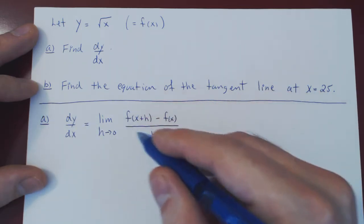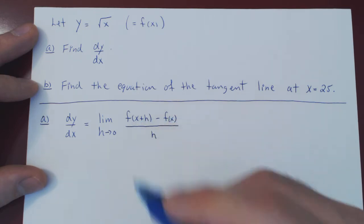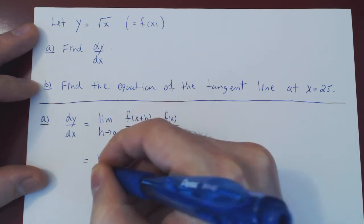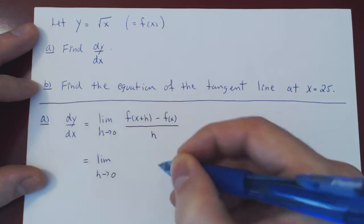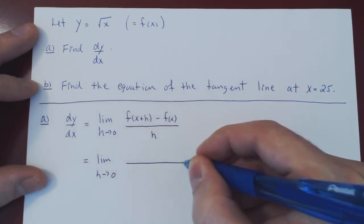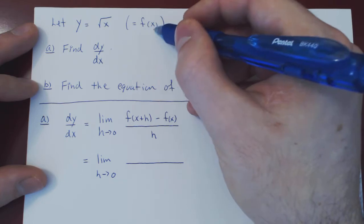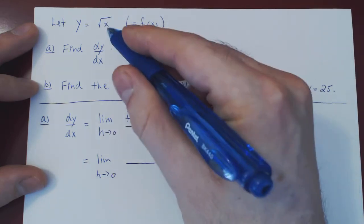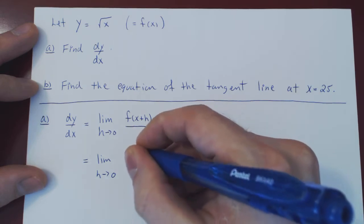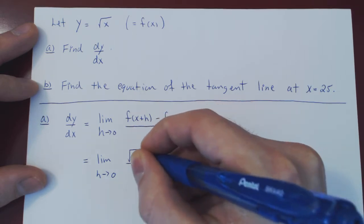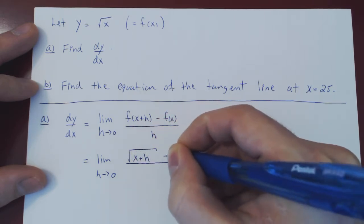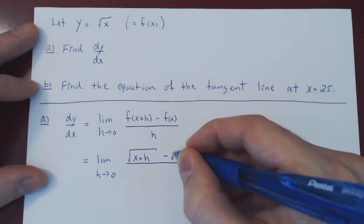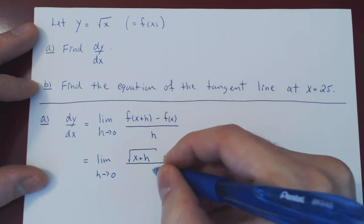First step, we have to find f of x and f of x plus h. We already have f of x. f of x plus h is a simple substitution — our function f of x is root of x, and replacing x by x plus h gives us the root of x plus h. So we have root of x plus h minus root of x, all over h.